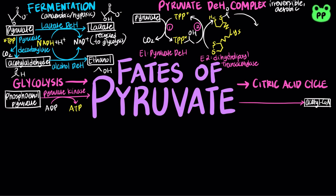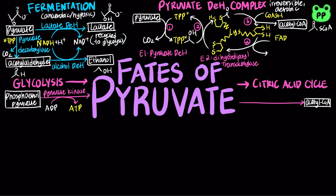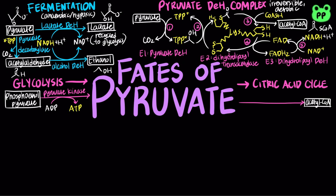Next, dihydrolipoyl transacetylase transfers the acetyl group and lipoamide onto coenzyme A, forming acetyl-CoA and a reduced lipoamide. Next, the third enzyme, dihydrolipoyl dehydrogenase, oxidizes lipoamide coupled to the reduction of FAD to FADH2. In the last step, FADH2 is reoxidized to FAD, which is coupled to the reduction of NAD+ to NADH.